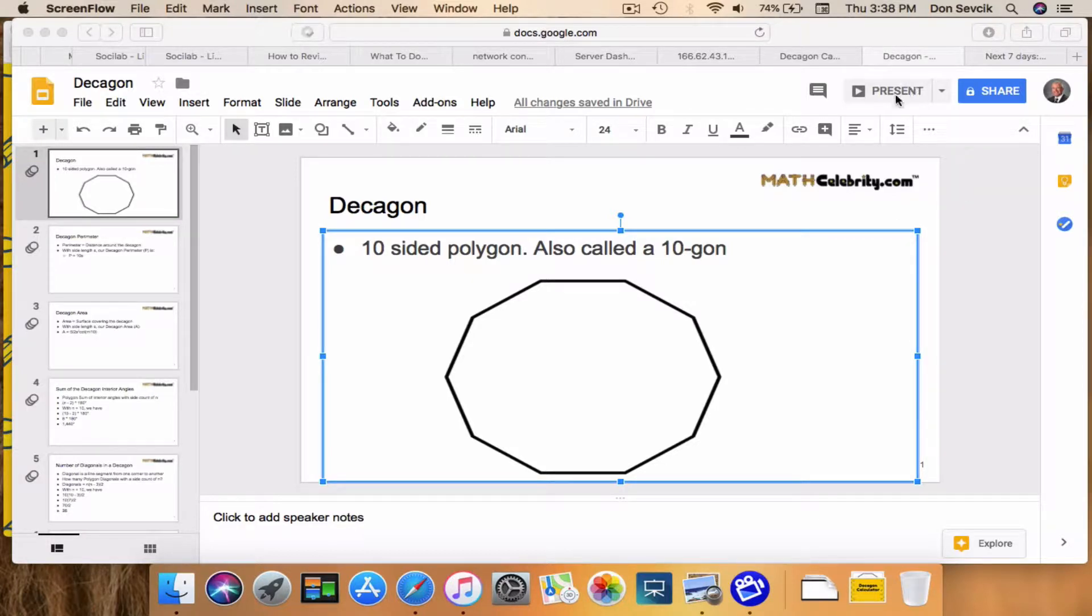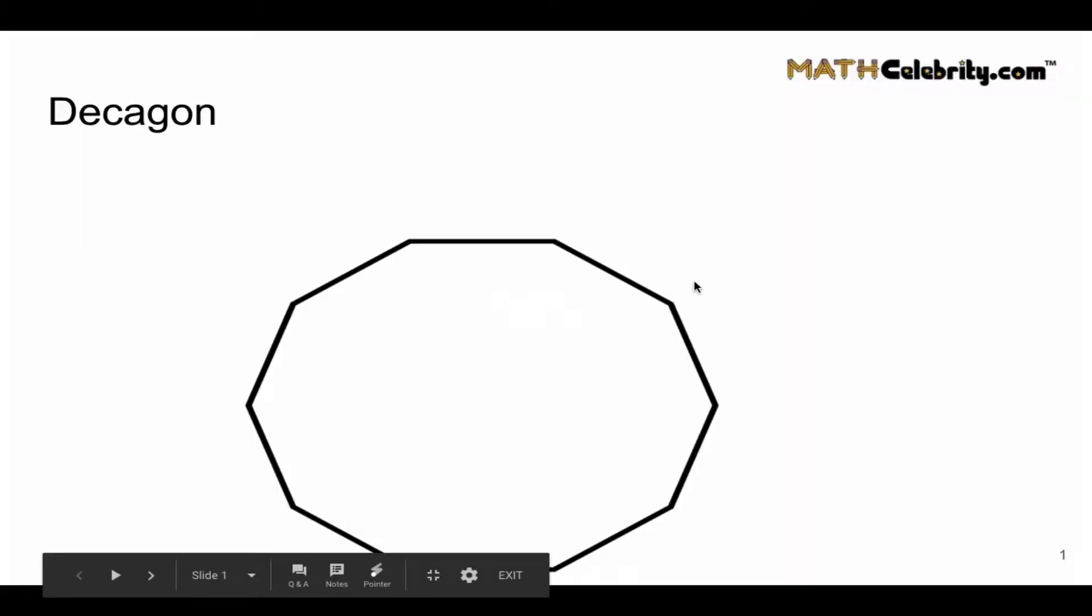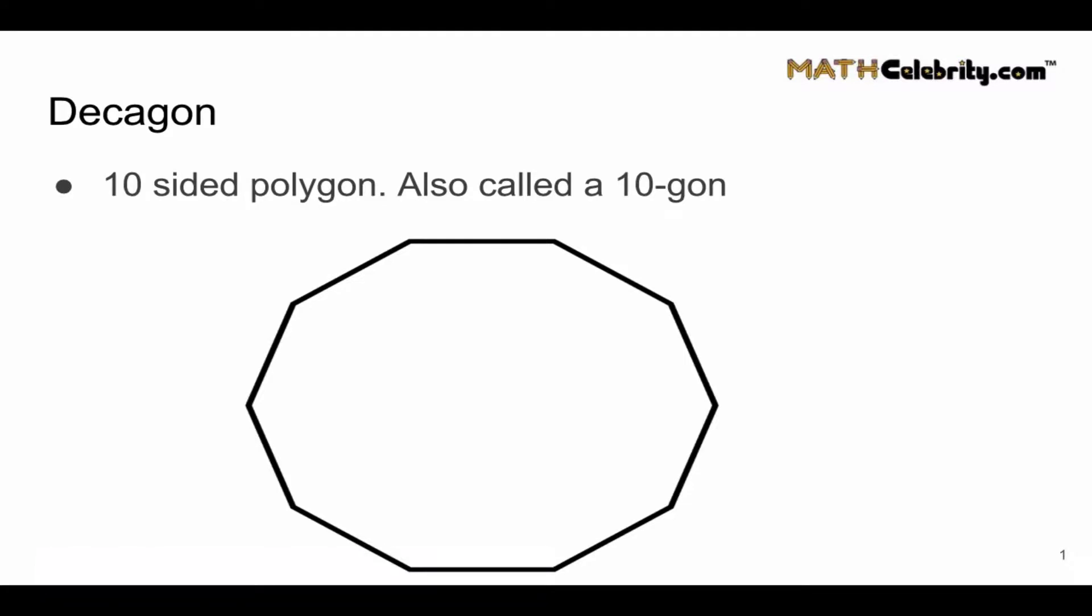Let's talk about Decagons. What is a Decagon? It is a ten-sided polygon. We also call this a ten-gon. And here's the Decagon shape here. So let's start counting sides.